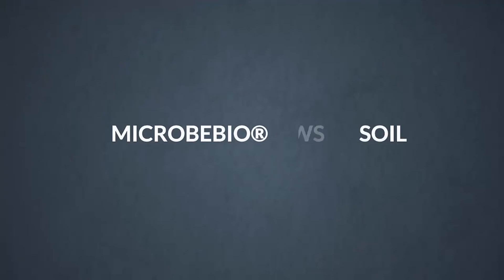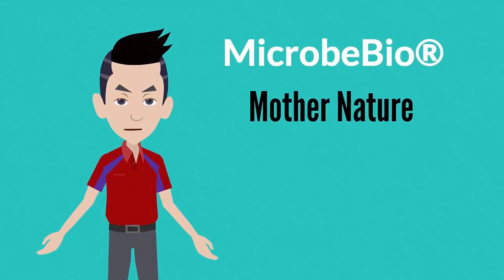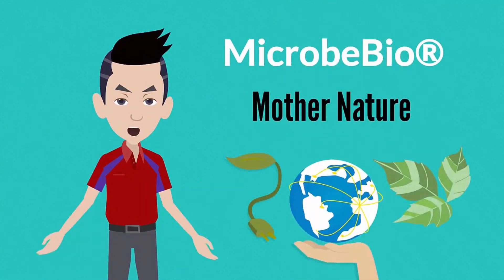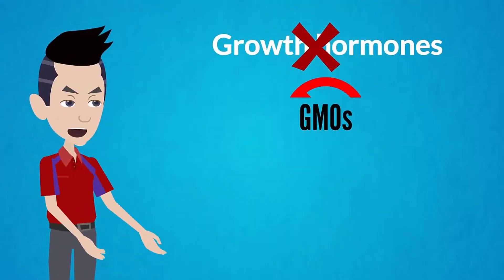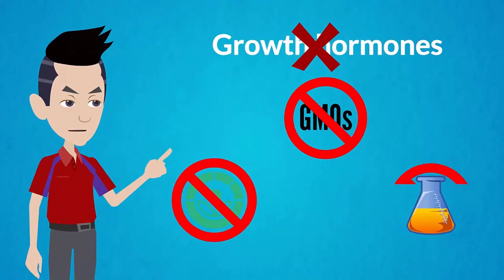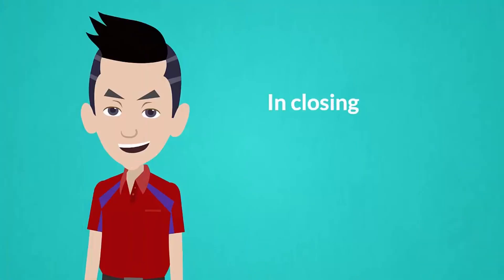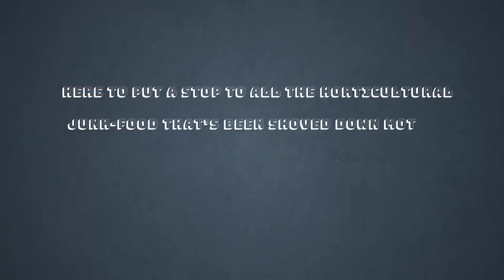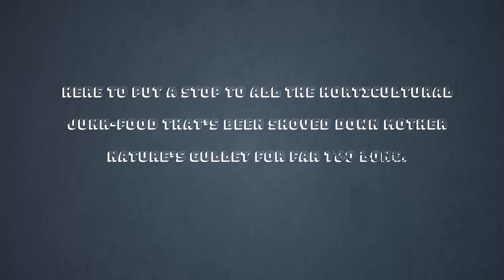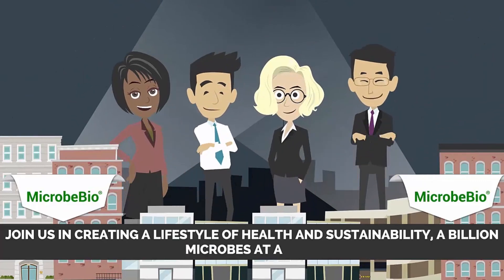MicrobeBio grows soil. You might say MicrobeBio has taken the best of mother nature and put it into a concentrated form. Like all natural products should be, we never use growth hormones or GMOs, never irradiate, and never use chemicals that are harmful to humans, livestock, or the planet. Think of MicrobeBio products like this: we're the health food of plant food, here to put a stop to all the horticultural junk food that's been shoved down mother nature's gullet for far too long. Join us in creating a lifestyle of health and sustainability — a billion microbes at a time.